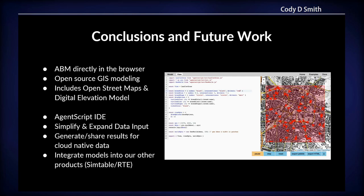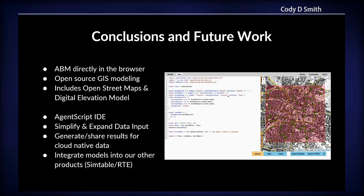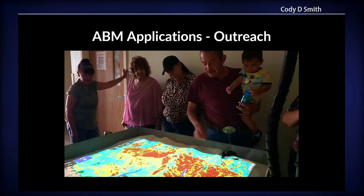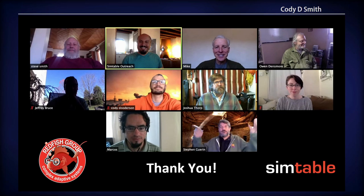In conclusion, we have some future work to do. We'd like to import more cloud-native data — we've learned a lot about that at this conference. Right now we can import OpenStreetMaps, some digital elevation models, and a little land cover, but there's a lot more data we could use. We'd also like to integrate our models more into our products and create more models. We have an IDE we're working on — it's not very good yet, but you can see it on the right and find it at agentscript.org. You're welcome to play with it. Thank you very much.